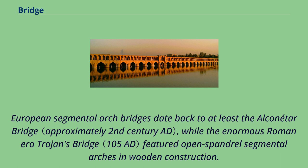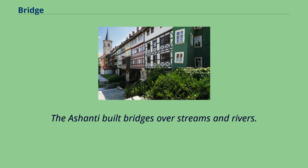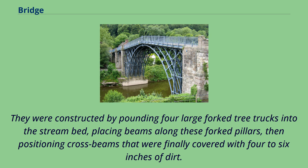European segmental arch bridges date back to at least the Alcantara Bridge, while the enormous Roman-era Trajan's Bridge featured open-spandrel segmental arches in wooden construction. Rope bridges, a simple type of suspension bridge, were used by the Inca civilization in the Andes Mountains of South America just prior to European colonization in the 16th century. The Ashanti built bridges over streams and rivers, constructed by pounding four large forked tree trunks into the streambed, placing beams along these forked pillars, then positioning crossbeams finally covered with four to six inches of dirt.